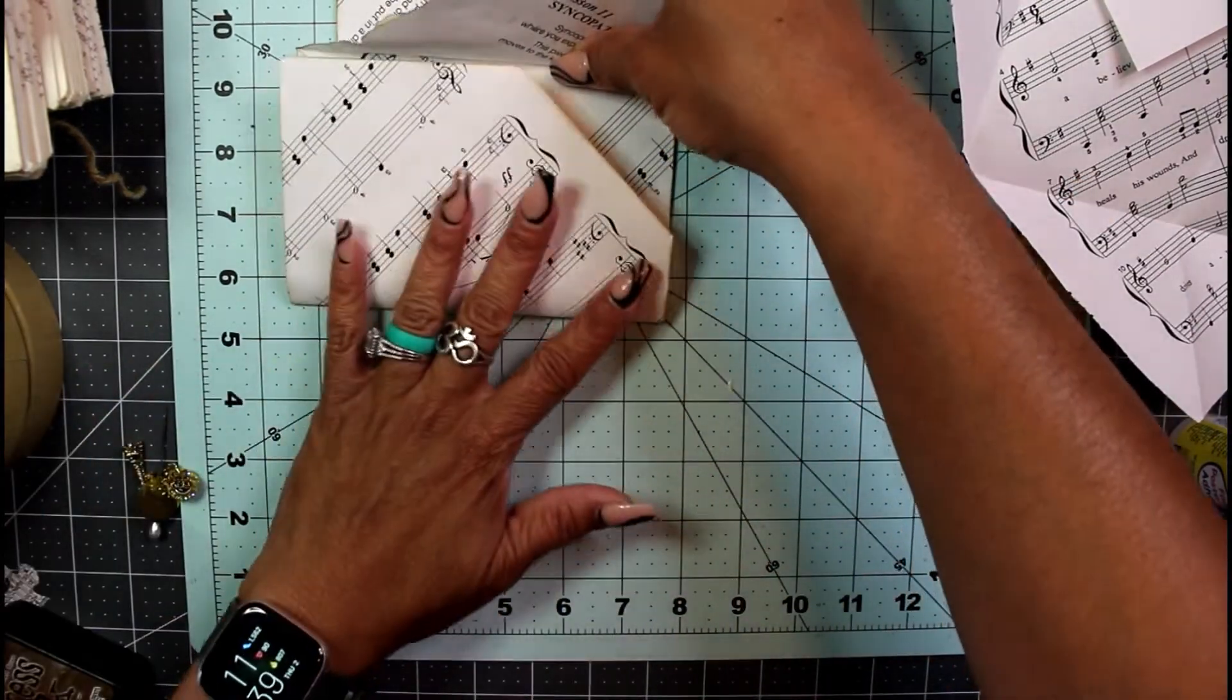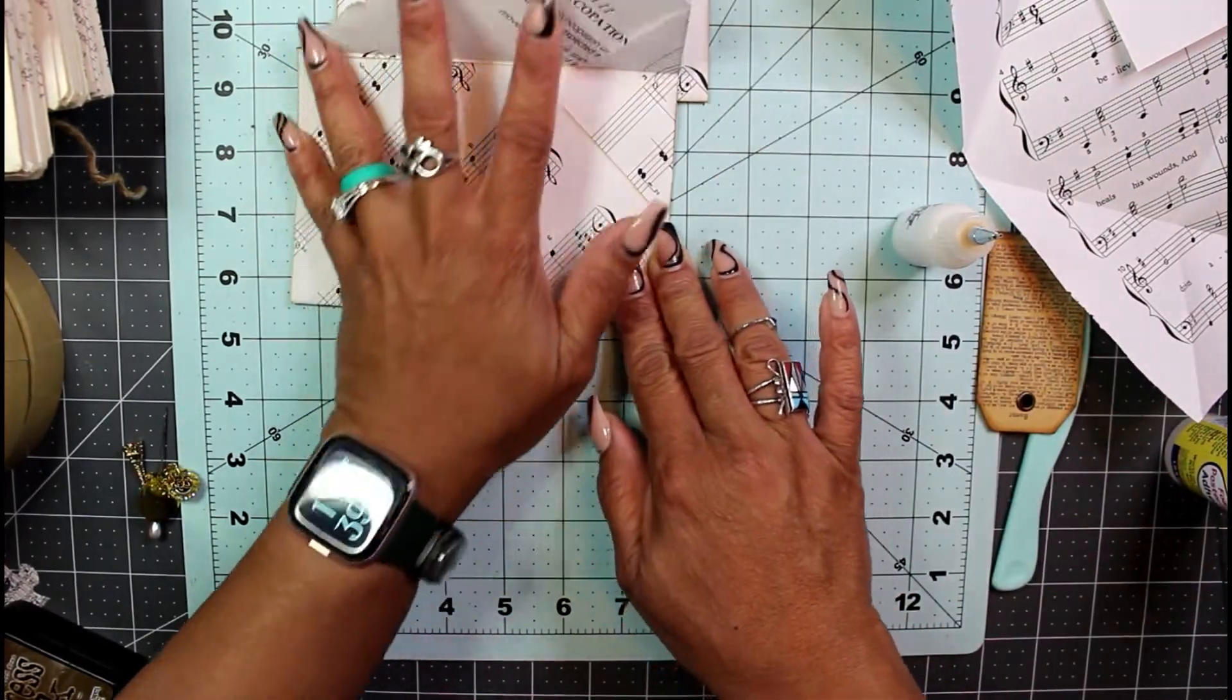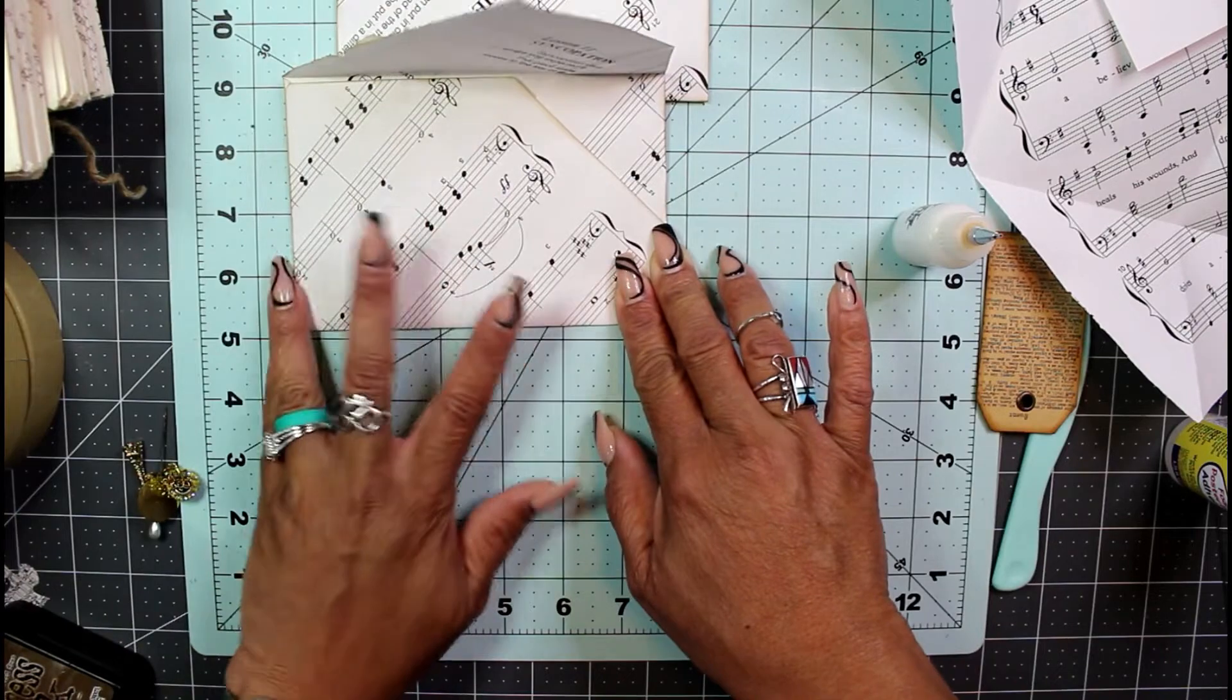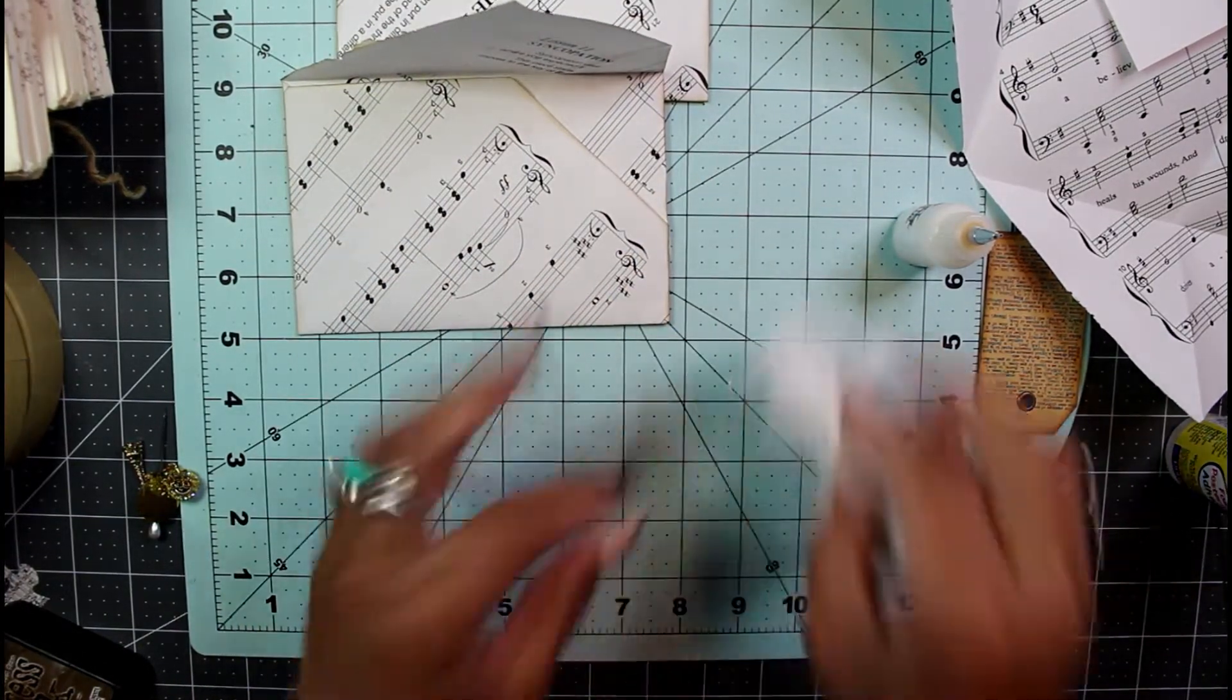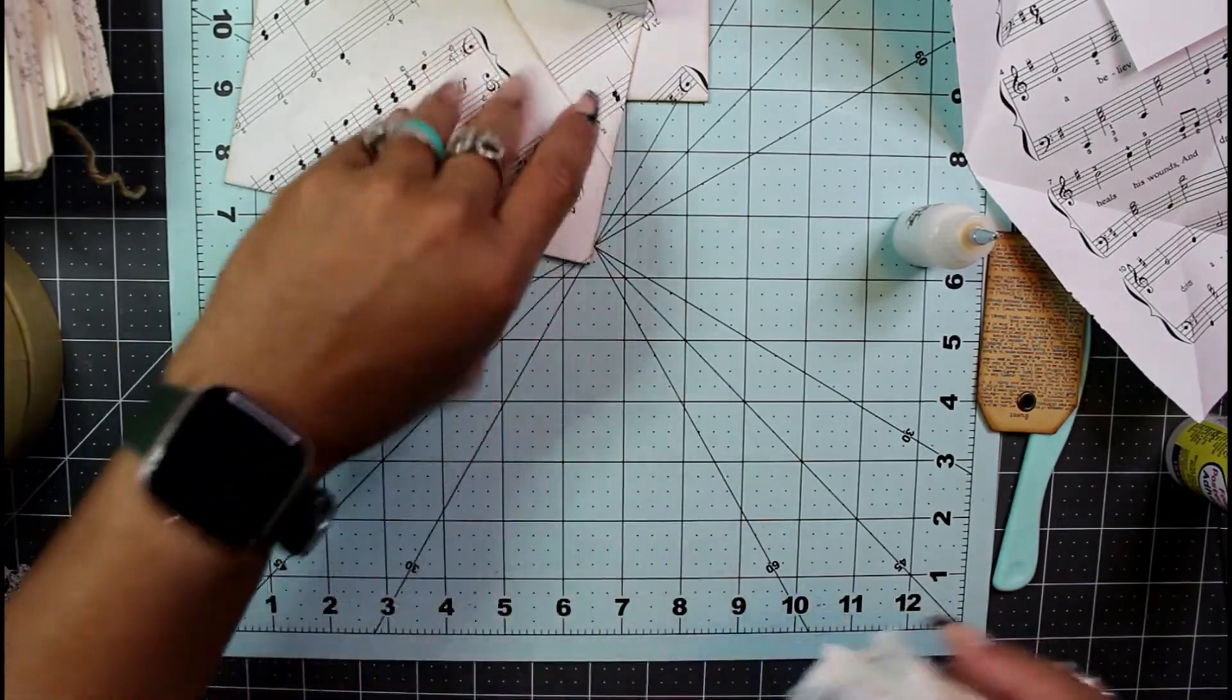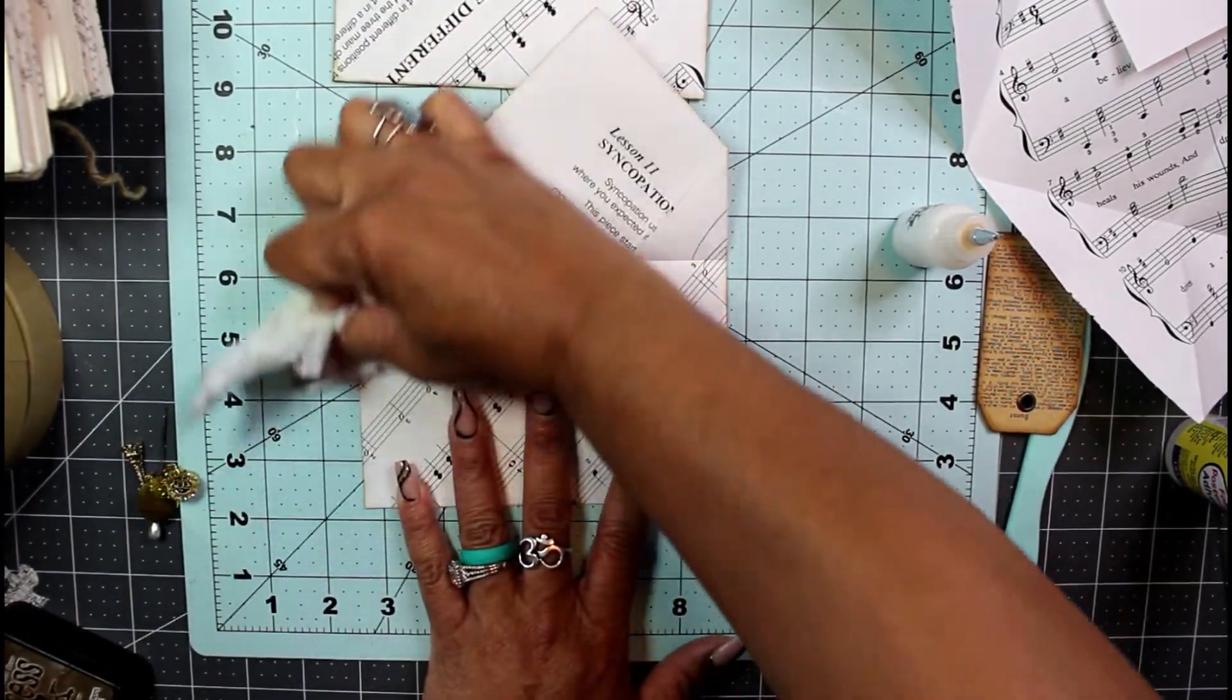Just use your fold lines to get that glue right onto the edge. I'm gonna use my dry wipes to clean up any excess that may have oozed out.